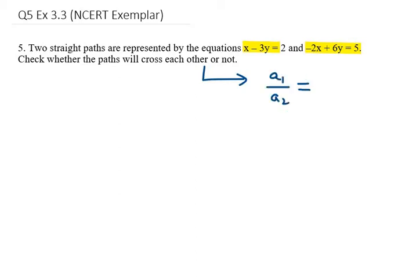For unique solution we know the formula: a1 over a2 is not equal to b1 over b2. If we have two paths in the straight line and we need them to intersect each other, then it must have a unique solution.